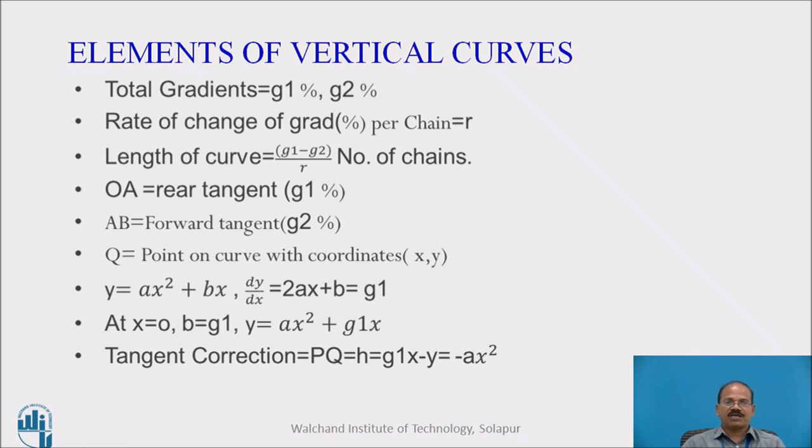The length of the curve can be calculated with a very simple calculation of difference of the two gradients divided by r. That is difference of gradient 1 and gradient 2 divided by rate of change of gradient. The answer that we will be getting will be number of chains. If you know the unit chord length or chain length, by multiplying the number of chains by this value, you can get the length of curve.